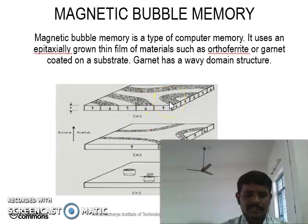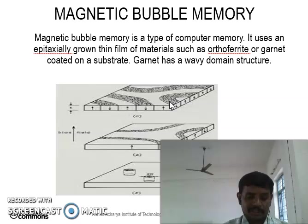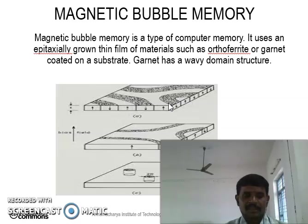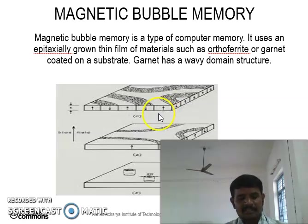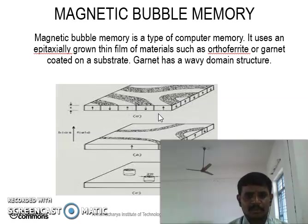Examples of magnetic bubble materials include area garnets, hexagonal ferrites, rare-earth microstructure granites, and amorphous bubble materials. These are the examples of the magnetic bubble memories.